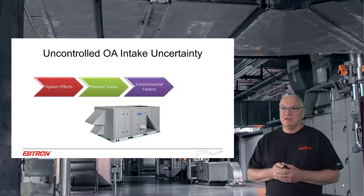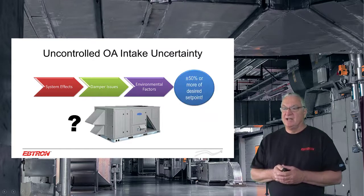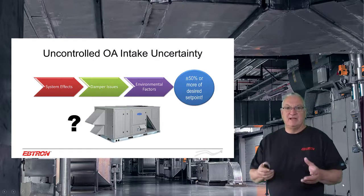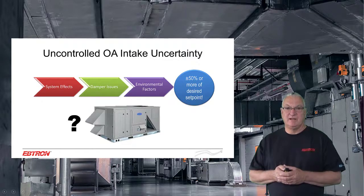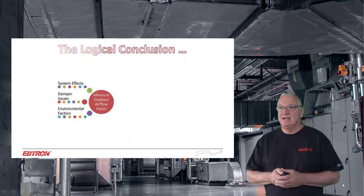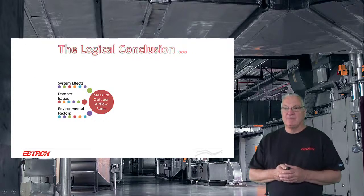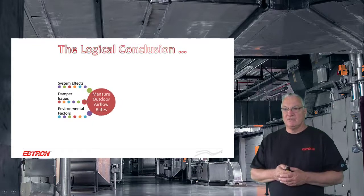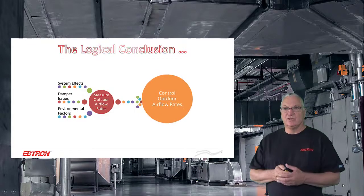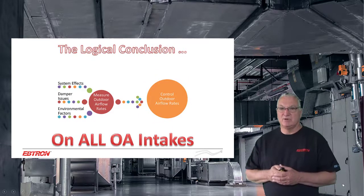We're going to show you that uncontrolled outdoor air intake flow rates — which is the bulk of what we have right now — has a tremendous uncertainty of at least 50 percent of setpoint, and in many cases even more than that. Hopefully, we get the logical conclusion to everybody that it's not just about measuring outdoor air flow rates, but actually controlling them, on all systems.